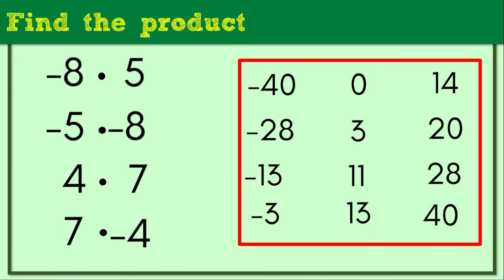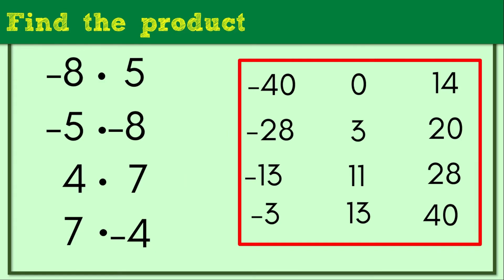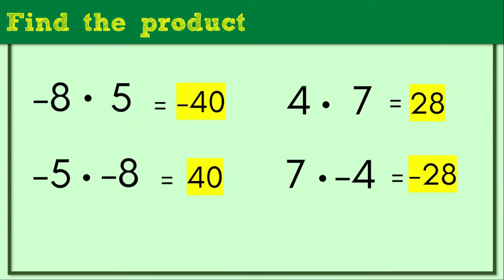It's your turn — let's assess your understanding. Answer this and find the product; inside the red box you'll see all the choices. You may pause this video. The answers are: a negative integer times a positive gives a negative; negative times negative gives a positive; and positive times positive gives a positive. So we have negative 40, positive 40, positive 28, and negative 28.